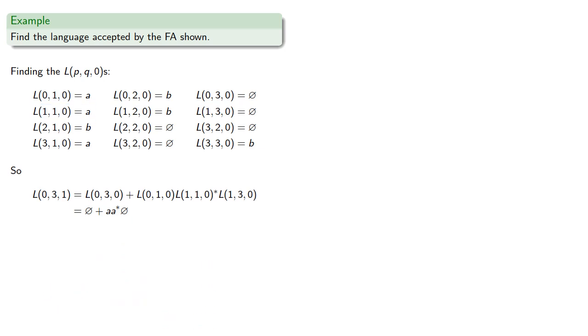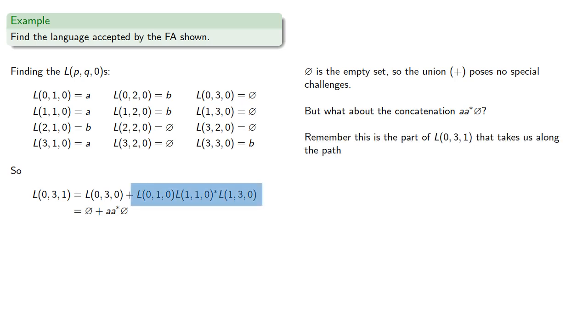Now, remember this is the empty set, so the union poses no special challenges. But what about this concatenation a, a star, empty language? Remember, this is the part of our language that takes us along the path from 0 to 1, a loop, and then on to 3.